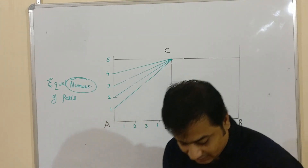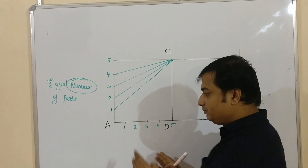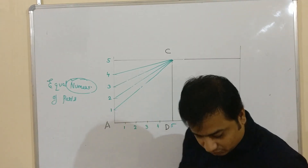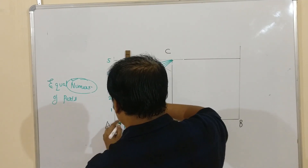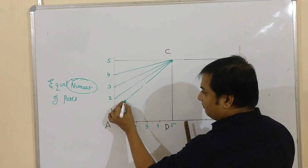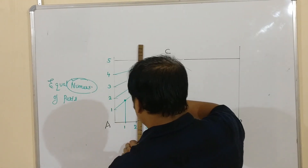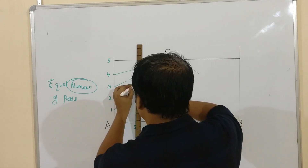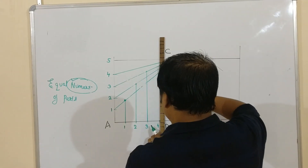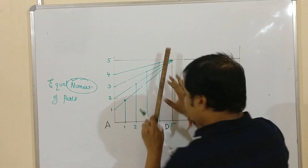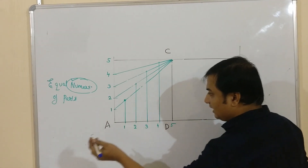Next, drop vertical lines from each of the horizontal division points. The vertical line dropped from point 1 will intersect line 1C at a point — this is the first point through which the parabola will pass. Similarly, drop a vertical from point 2 to get the second point, from point 3 for the third point, and from point 4 for the fourth point. We will be getting 4 points in total.